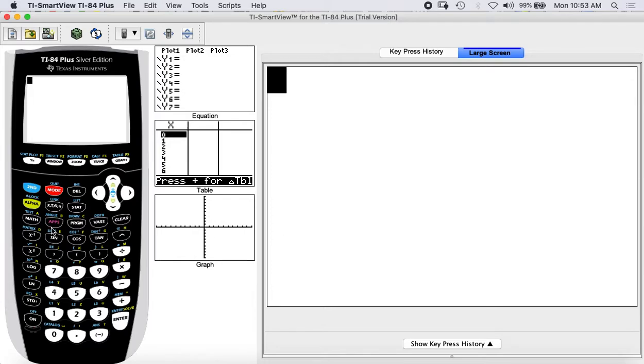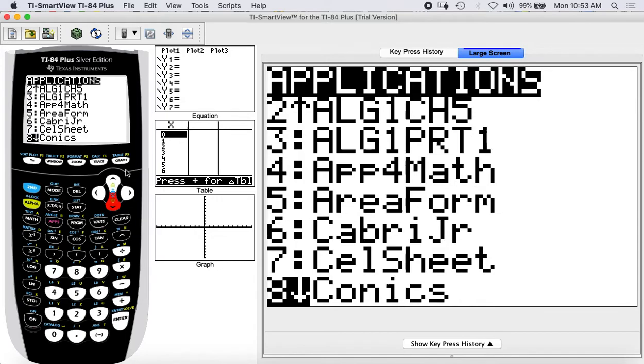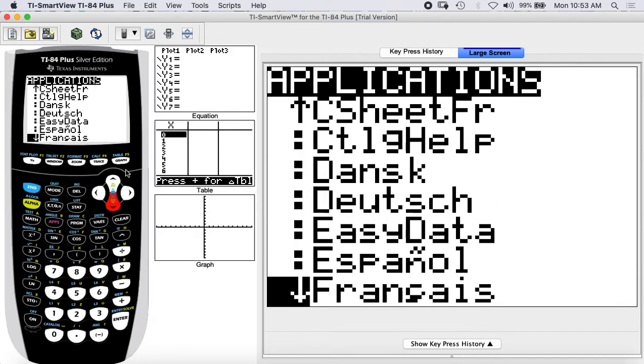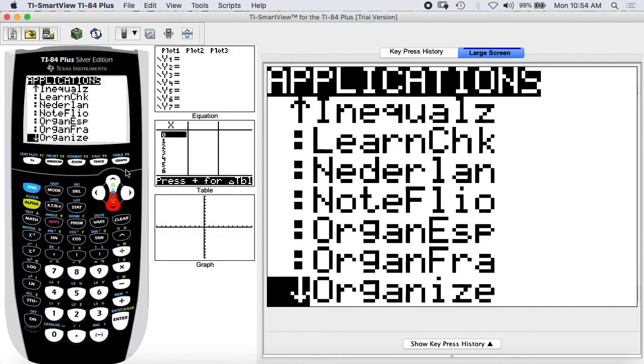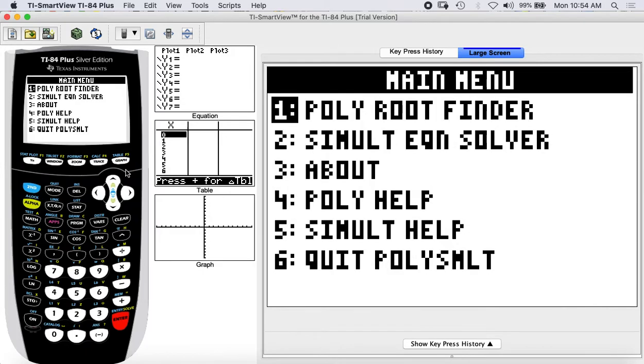In this menu we are looking for... I'm going here quickly, yeah, poly summation 2, and we enter. We enter and then poly root finder, I enter.